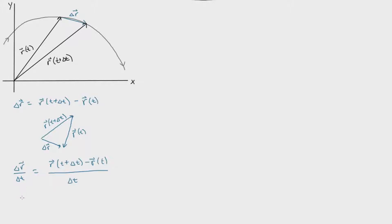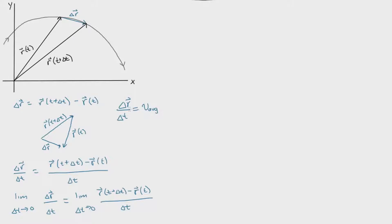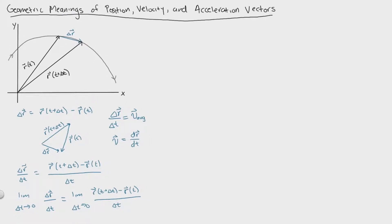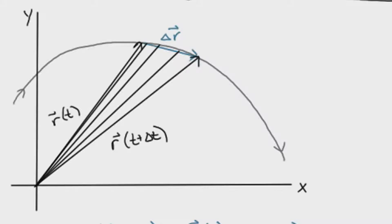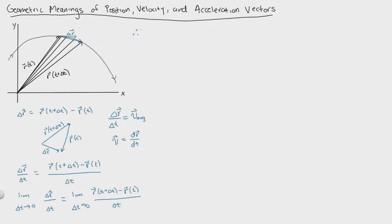We can do better than average velocity by using the definition of the derivative to get the instantaneous velocity vector. To do that, we take the limit as delta t approaches zero. If you remember back in calculus, this is actually the formal definition of the derivative, but in vector format. So the instantaneous velocity vector is dr/dt, where r is a function of time. As delta t approaches zero, the velocity vector becomes more and more tangent to the curve — therefore the instantaneous velocity vector will be tangent to the path of motion.